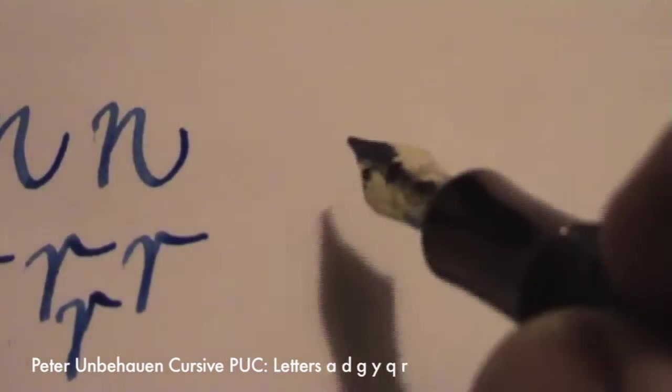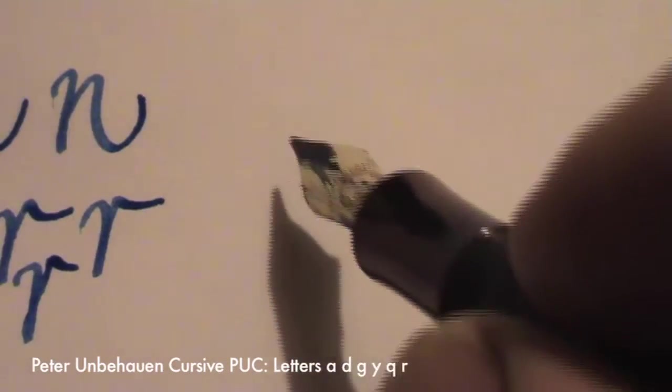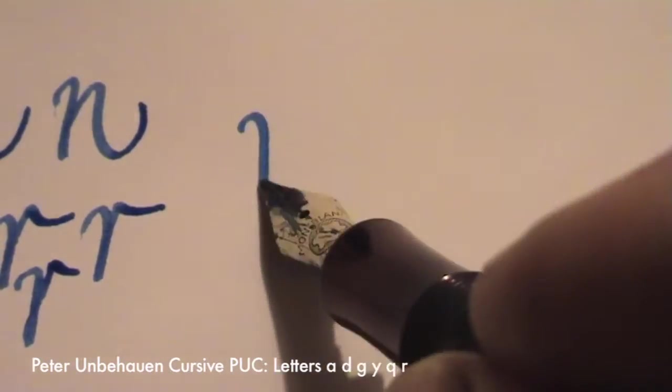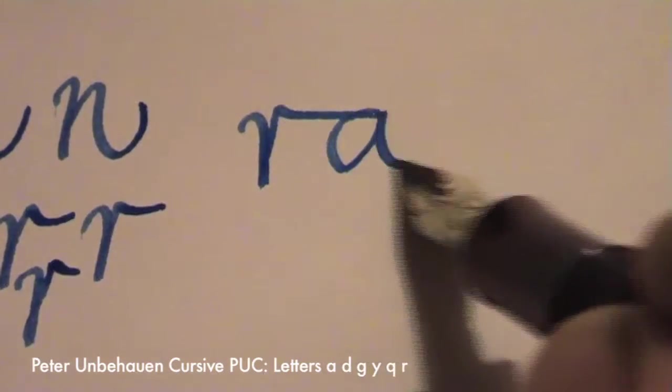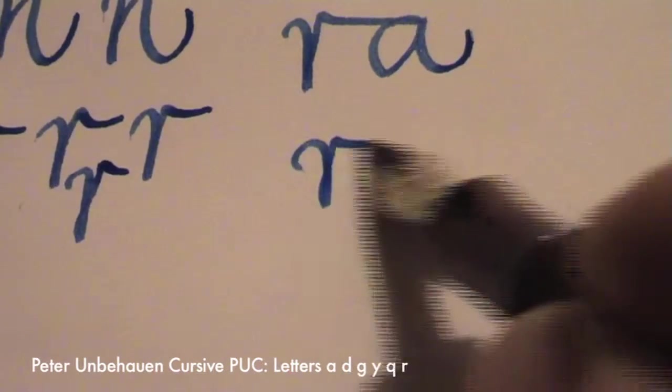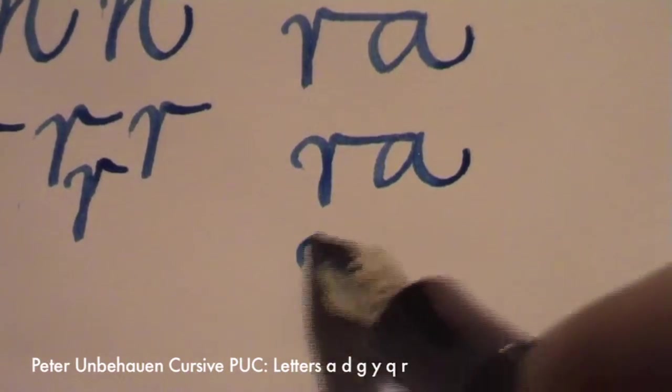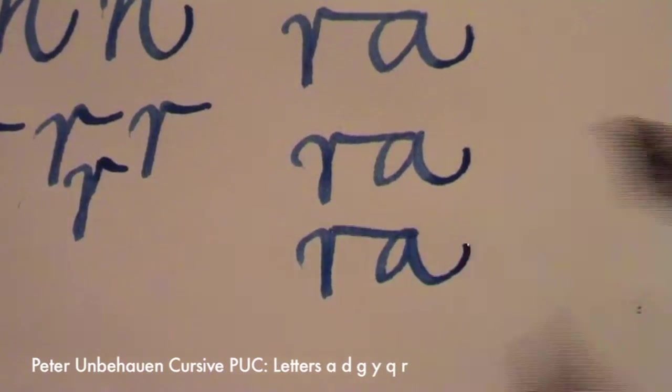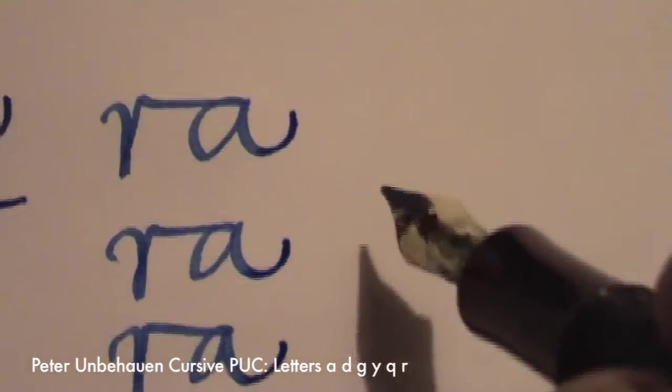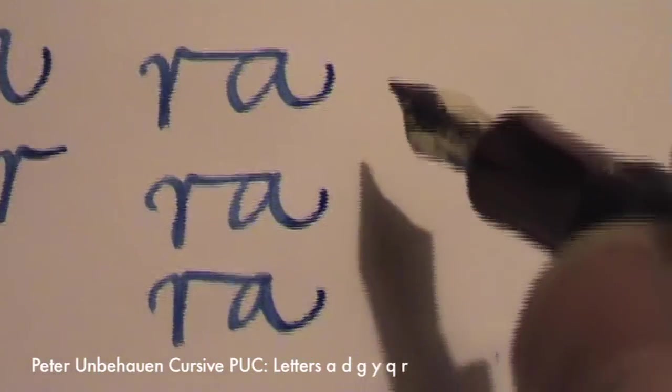With these two letters we get to the A. As you can see, from the R to the A is pretty easy.